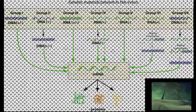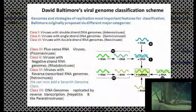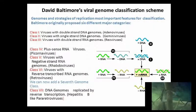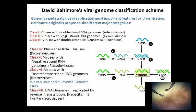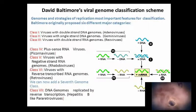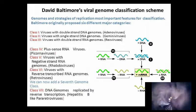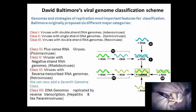Group 5: Negative-sense single-strand RNA viruses — examples include orthomyxoviruses and rhabdoviruses.